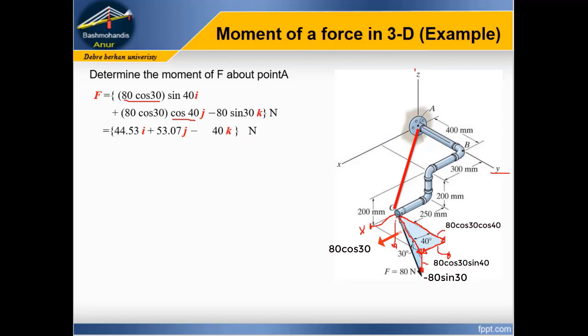Next is to determine the position vector rAC. Position vector from point A to C - simply the distance between 300 and 250. 250 plus 300 is 500, 550 mm in the i direction, 0.55 meter in the i direction.